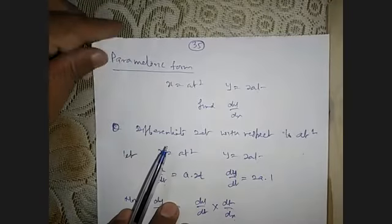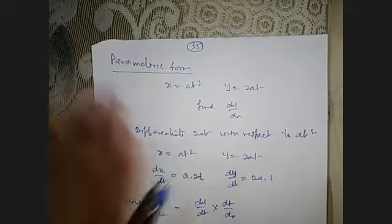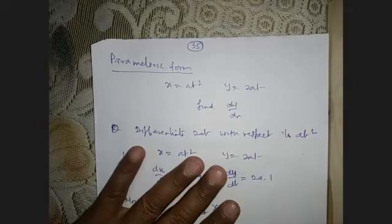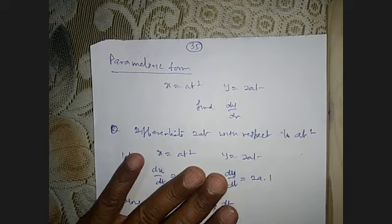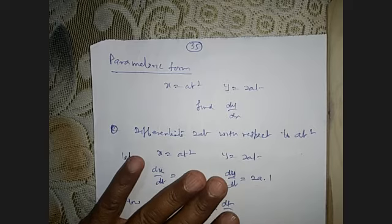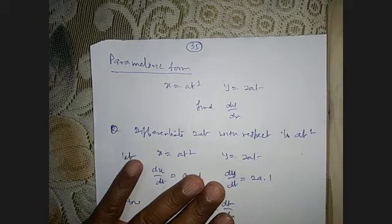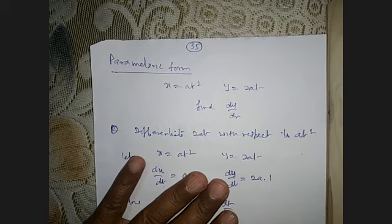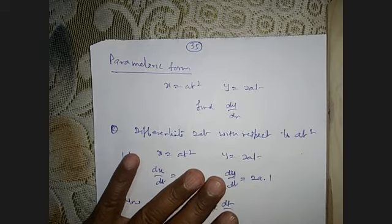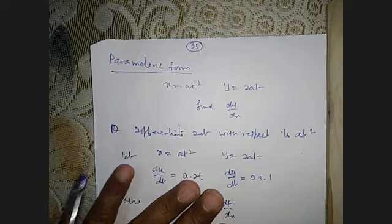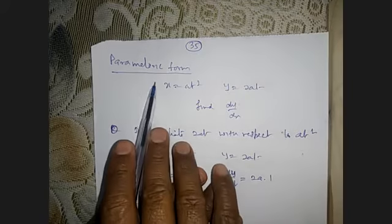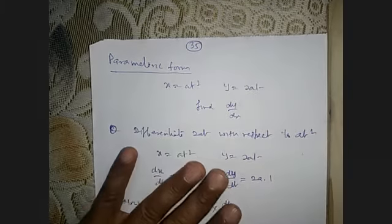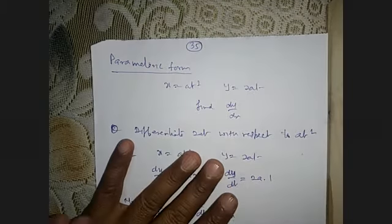Hello students, this is the continued part of the Continuity and Differentiability chapter number 5. It's part number 7: differentiation of parametric form.